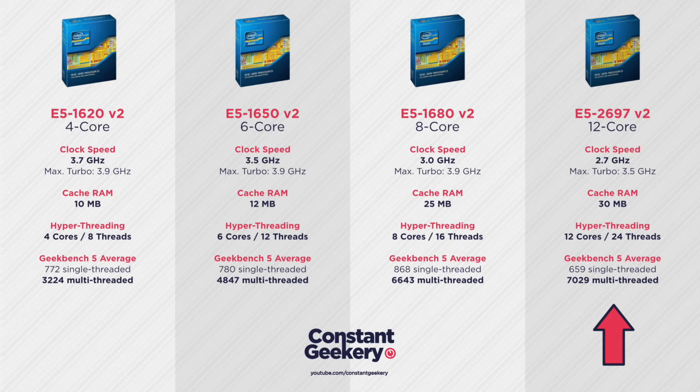The 12-core, which is the 2697, runs at 2.7 gigahertz and can turbo up to 3.5 gigahertz, with 30 megabytes of cache. The single-threaded performance drops off to 659 — a 24% drop compared to the 8-core — but multi-threaded goes up to 7029, about 6% better than the 8-core. The more cores you have, the lower the clock speed, because higher clock speeds draw more power and create more heat. With more cores, you can't draw as much power without the CPU throttling.